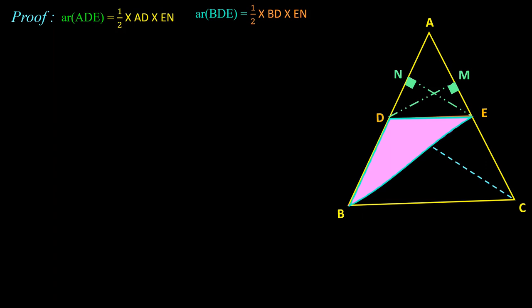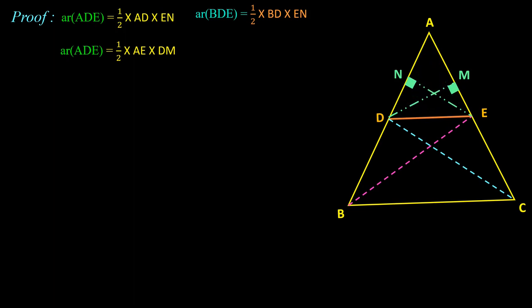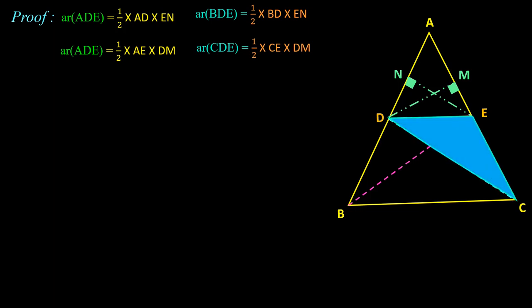Next I am taking one more ratio using base AE. For triangle ADE with base AE, DM is the perpendicular dropped from D, so area of triangle ADE = ½ × AE × DM. For triangle CDE with base CE, DM is again the perpendicular height, so area of triangle CDE = ½ × CE × DM.